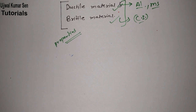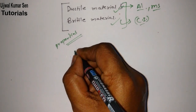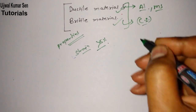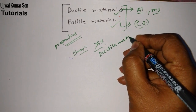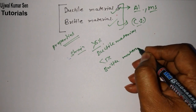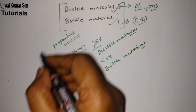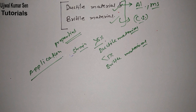How will you come to know whether a material is ductile or brittle? Of course from its nature, but more precisely it depends on strain. If strain is greater than 5%, then it is known as a ductile material. If it is less than 5%, then it is known as a brittle material. These two things are most important for understanding ductile and brittle materials.